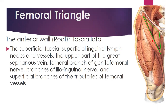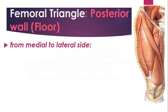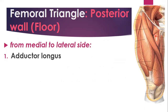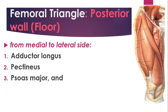The floor is formed by muscles arranged from medial to lateral: the adductor longus muscle, which is the first muscle from the medial part and also helps form the medial border; then the pectineus; then the vastus medialis; and finally the iliacus. These four muscles form the floor of the femoral triangle.